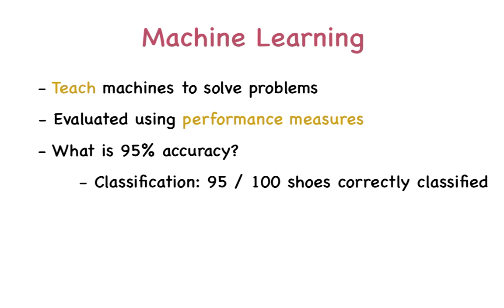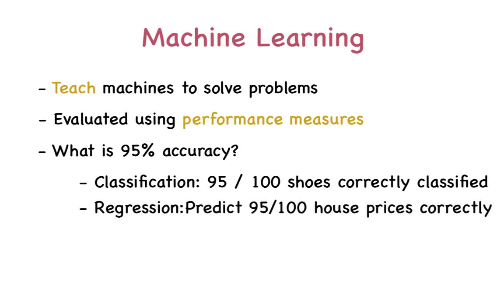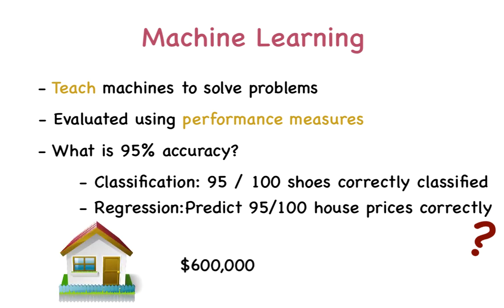Now consider the regression problem of determining the price of a house. If I say our system exhibits a 95% accuracy, then it means that the system accurately predicts 95 houses for every 100 houses. But does this really make sense? When is a house price considered correctly predicted? For a $600,000 house, if the predicted price is $400,000, then we can safely say that the prediction is incorrect.